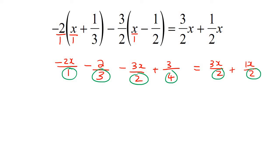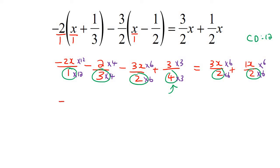The best way is to look at the largest denominator, which is 4. Can 4 work as the common denominator? No, it won't. The next multiple of 4 is 8 — would that work? No. The next multiple is 12 — that one would work. So our common denominator will be 12. We're going to multiply to get all of them to 12, remembering always to do top and bottom. We don't need to write the denominator, so the top part will be: negative 24x, then 2 times 4 is 8, then 3 times 6 is 18x, then 3 times 3 is 9, then 3 times 6 is 18, and 1 times 6 is 6x.